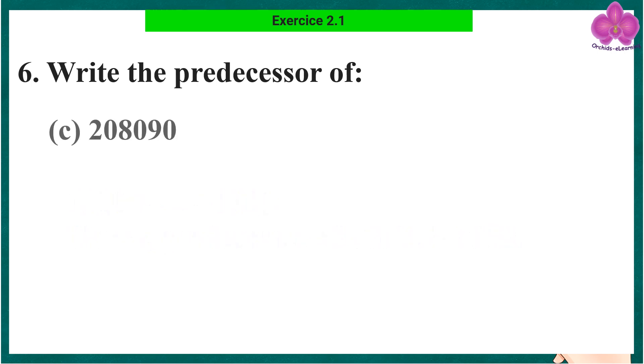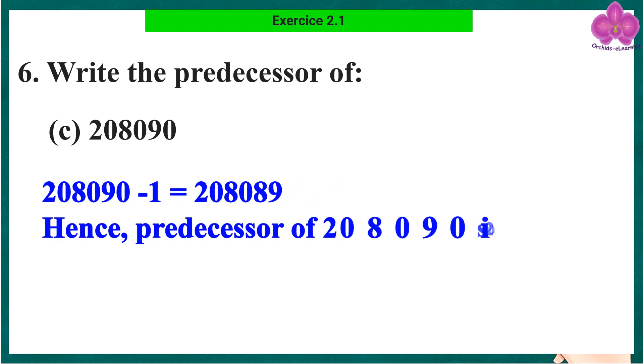Part c: 2,80,090. 2,80,090 minus 1 equals 2,80,089. Hence, predecessor of 2,80,090 is 2,80,089.